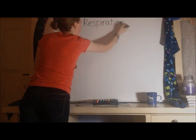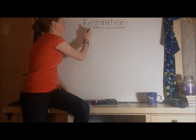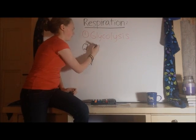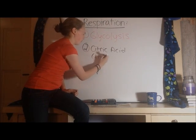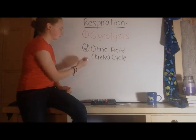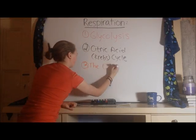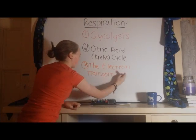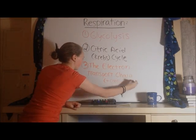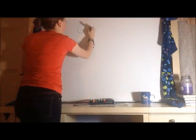Respiration is in three main parts. The first part is glycolysis, the second is the citric acid or Krebs cycle, and the third final part is the electron transport chain and chemiosmosis.